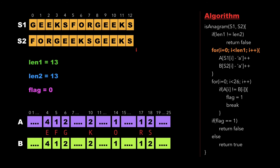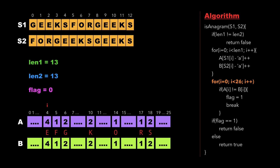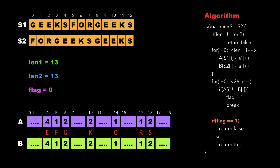We have now completed updating frequencies from s1 and s2 into arrays A and B. Since i is no longer less than length, we exit the for loop. We then run another for loop from i equal to 0 to 26, traversing arrays A and B. At each step we check whether A[i] is not equal to B[i]. In our case all values are equal, so we never set flag to 1. After completely traversing both arrays, since flag is not equal to 1, we go to the else part and return true — both strings are anagram of each other.